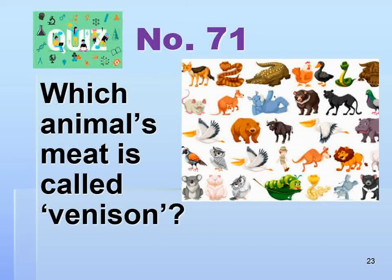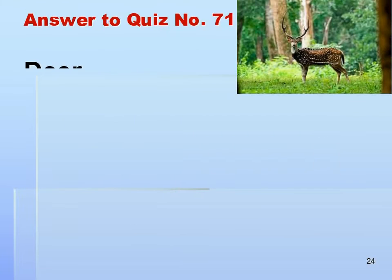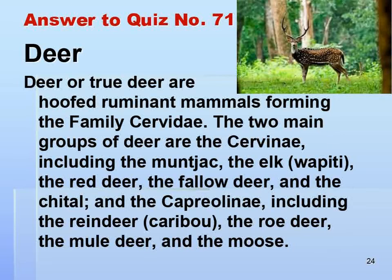Number 71. Which animal's meat is called venison? Answer: Deer.